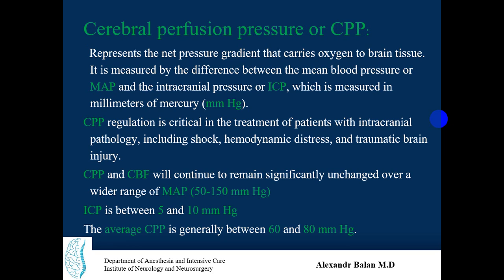Cerebral perfusion pressure and cerebral blood flow remain significantly unchanged over a wide range of mean arterial pressure. The target MAP range is 50 to 150 mmHg. Normal intracranial pressure is 5 to 10 mmHg, and the average cerebral perfusion pressure is generally 60 to 80 mmHg — at these values perfusion is adequate.